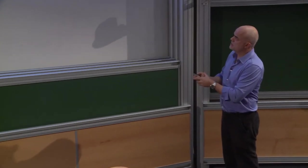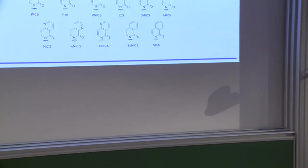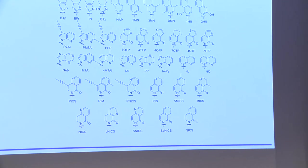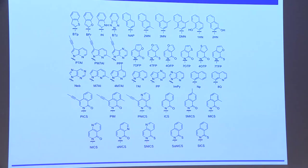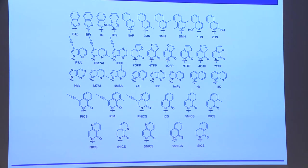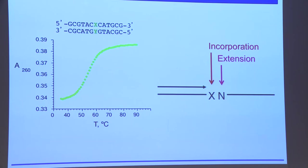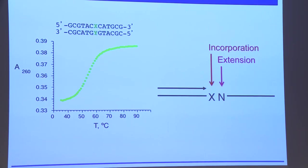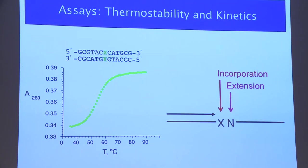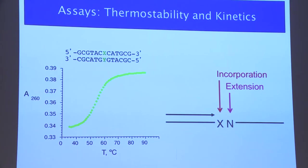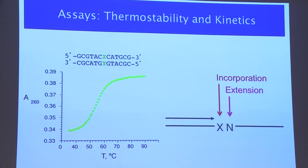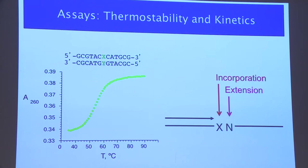There are a lot of different analogs here. One I'll talk about in a few seconds is this propenyl isocarbostyril compound. This collectively is what we refer to in the lab as the first generation set of analogs. In terms of the SAR, the assays we used included a stability assay where we synthesize the analogs as phosphoramidites, incorporate them into DNA, and measure thermal stability - the midpoint where 50% of duplexes are melted - which in a complex way relates to the thermodynamic stability of the base pair.